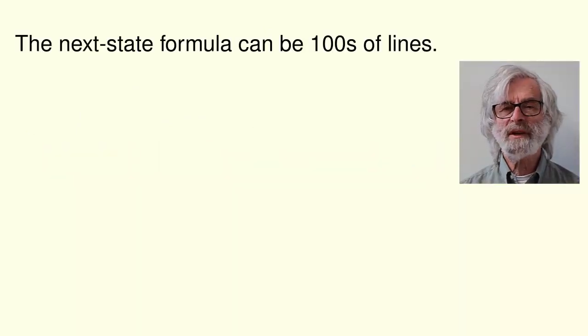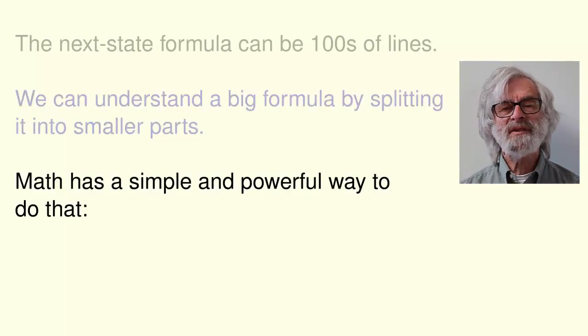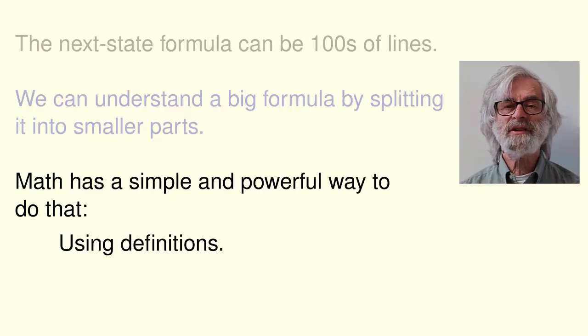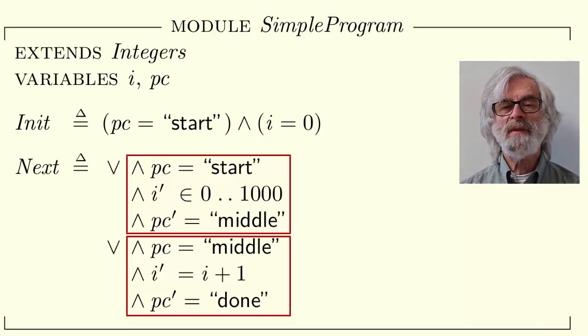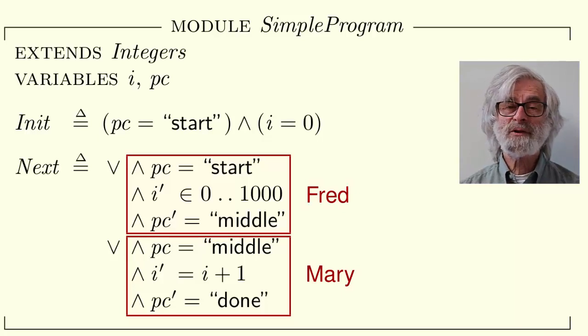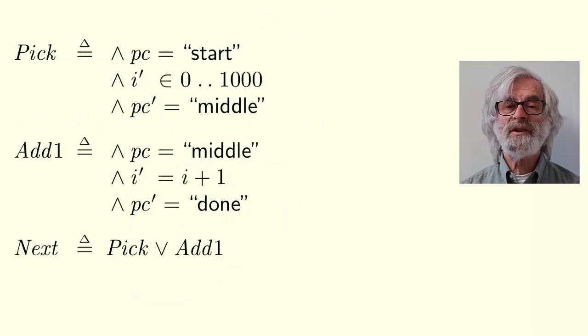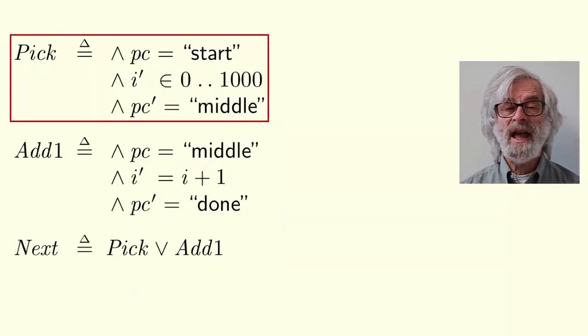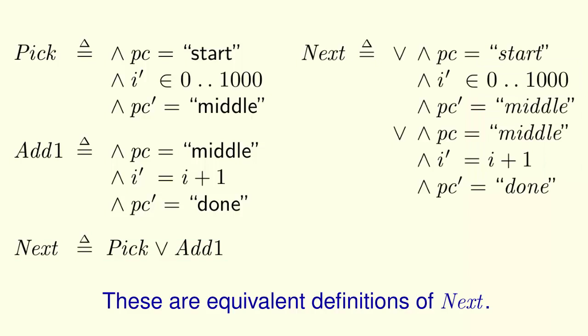Decomposing large specifications. For real specs, the next state formula can be hundreds or even thousands of lines. We can understand a big formula by splitting it into smaller parts. Math has a simple and very powerful way to do that. Using definitions. This spec is too simple to need splitting into parts. But let's do it anyway. An obvious way to decompose this spec is by giving names to these two sub-formulas. We could call them anything. Say, Fred and Mary. But more descriptive names are better. Such as, pick and add one. So, let's replace this definition of next with these three definitions. We define pick and add one. And then define next equal pick or add one. This definition of next is completely equivalent to our original definition. It doesn't matter which one we use.